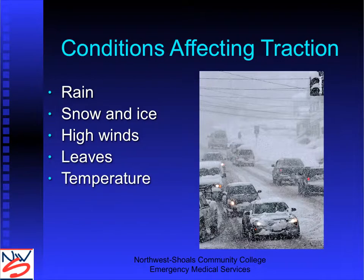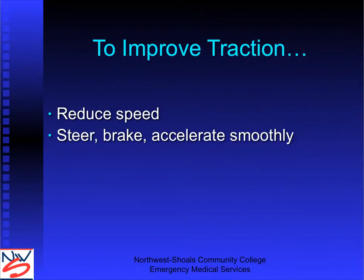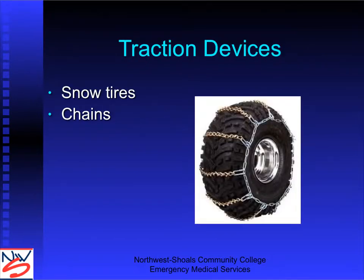Traction issues that can affect driving include snow and ice, rain, and high winds. Ambulances are much taller than normal vehicles and can be pushed easily by wind — especially noticeable going over bridges with crosswinds. If we think we're going to lose traction, slow down. Realize it's going to take longer to stop, longer to accelerate, and you must go much slower around corners to avoid sliding. Snow tires or snow chains are options, though in Wisconsin where I grew up, chains were actually illegal.